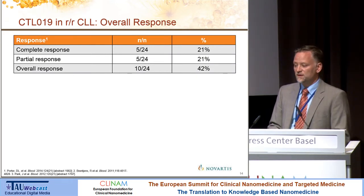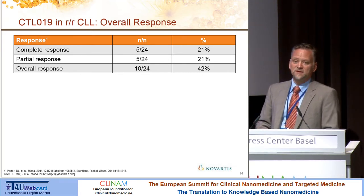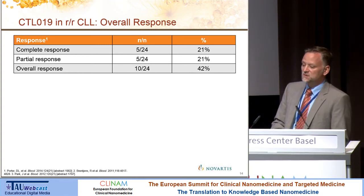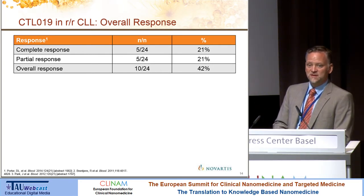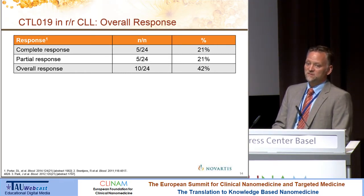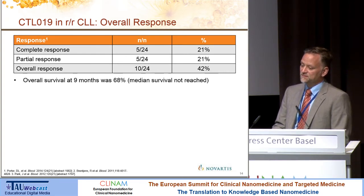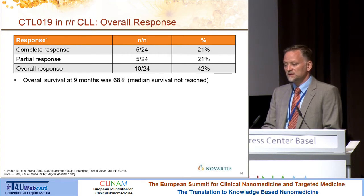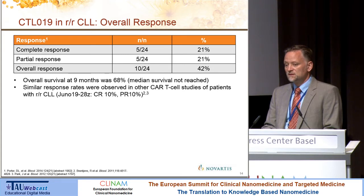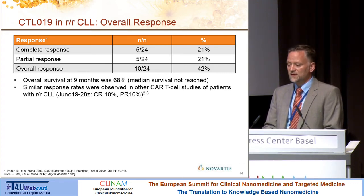Switching to chronic lymphatic leukemia: here you see a difference — the response rate is only 40%. We see 20% complete responses ongoing over time and the same rate of partial remission. Interestingly, high-risk mutations such as P53 mutation are actually responding. We now have long-term survivors who are completely disease-free in high-risk populations that cannot be successfully treated with chemotherapy. Overall survival at the last data cutoff was 68% at nine months. This compares well with other CAR-T constructs in clinical testing and appears to be a class effect, with some biological differences in persistence and overall efficacy.